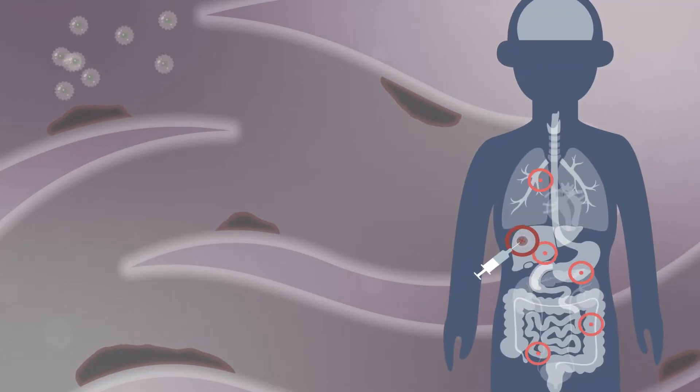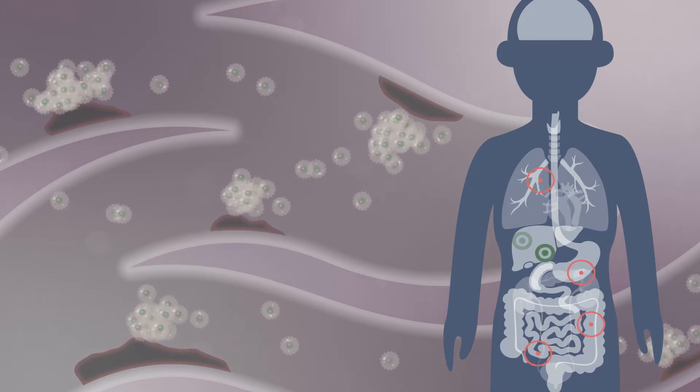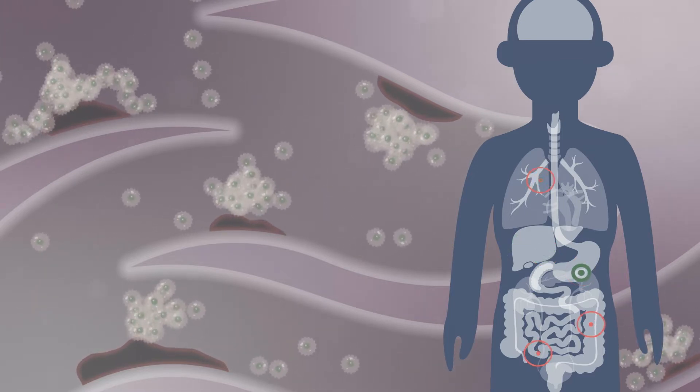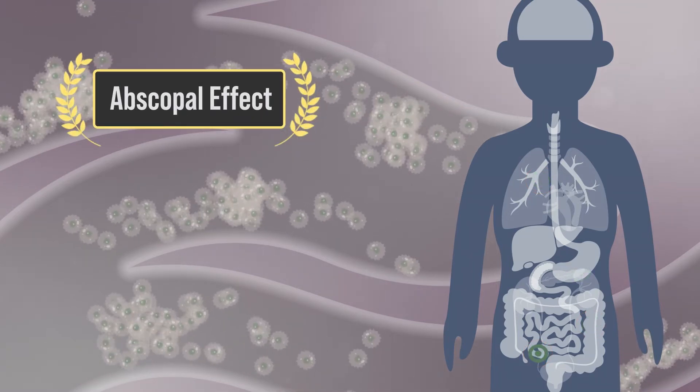By educating the immune system, we not only treat and kill the tumor that we inject the drug into, but also all of the other untreated metastatic tumor sites. This is known as the abscopal effect and is a holy grail in cancer treatment.